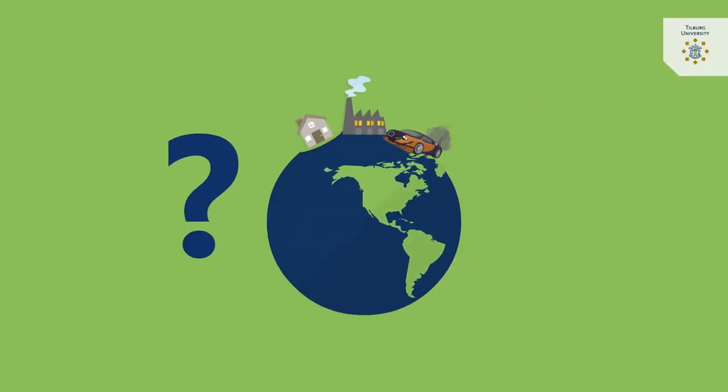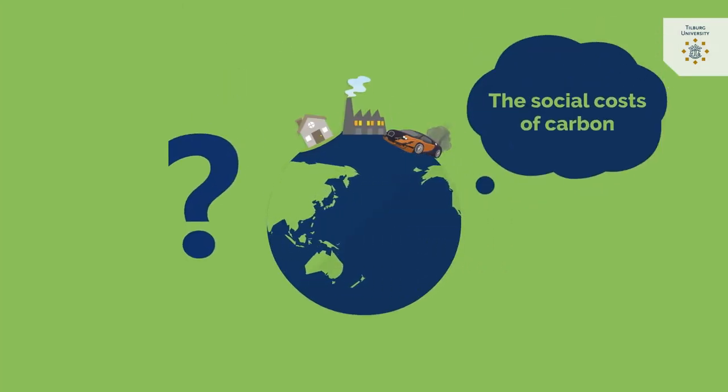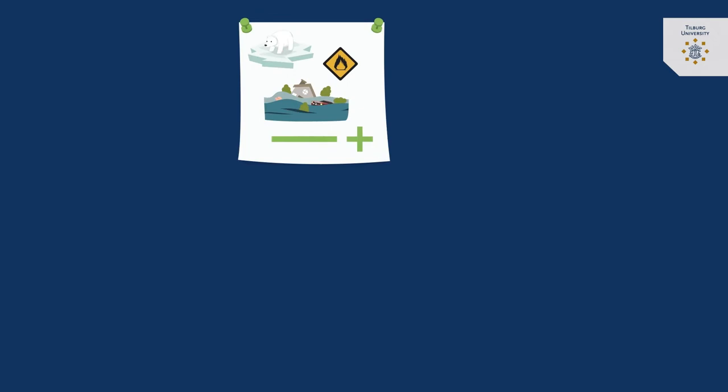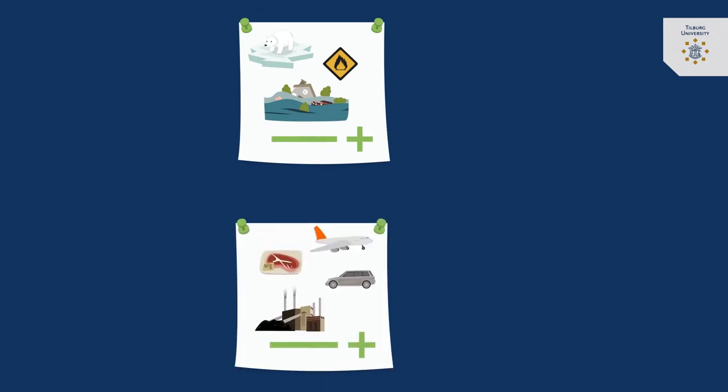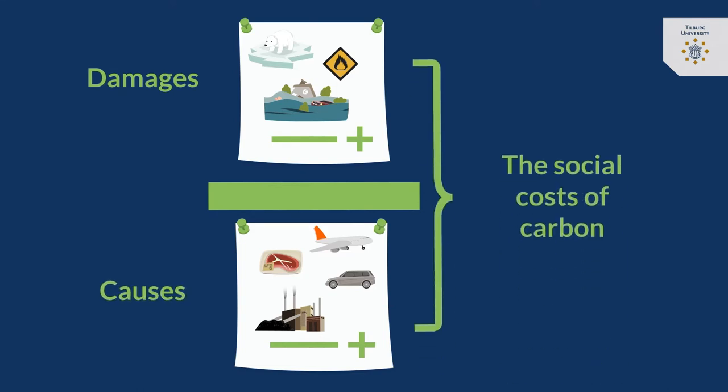To answer that question, economists calculate the social costs of carbon. The basic idea is simple. Economists calculate the expected damages from global warming and divide these by the emissions that cause the warming. The ratio between the damage and its cause is the social cost of carbon.